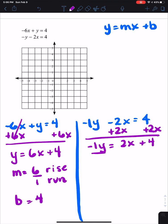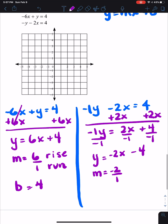And then we're going to get rid of the negative 1 by dividing. So every single thing is going to get divided by negative 1. So Y equals negative 2X minus 4. So my slope is negative 2 over 1 for my rise over run, and my B value is negative 4.